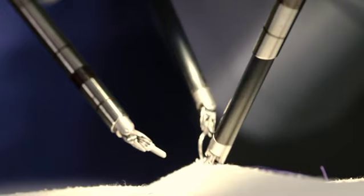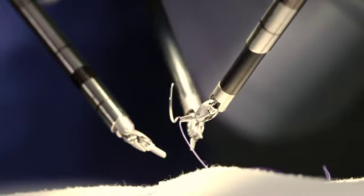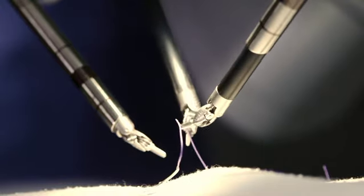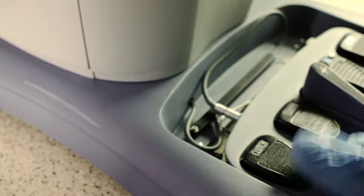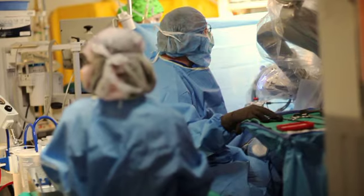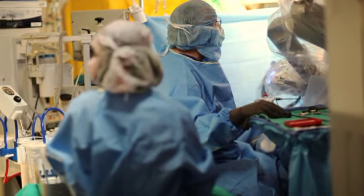The robot sits above the patient. It has several mechanical arms that hold a camera as well as surgical instruments. The surgeon uses hand controls and foot pedals to manipulate the robotic arms.